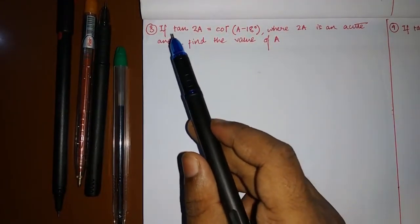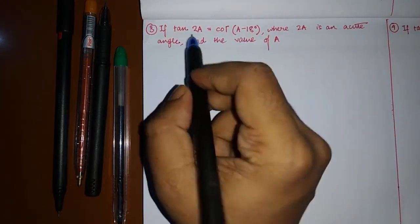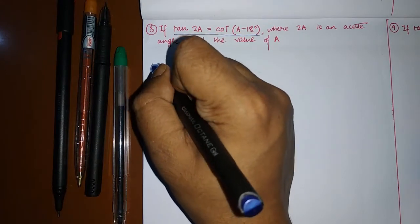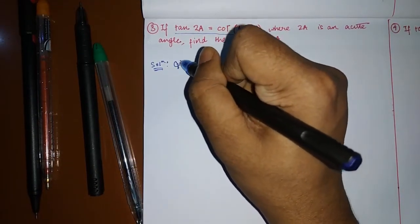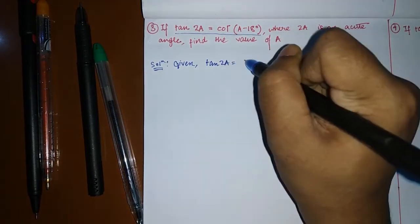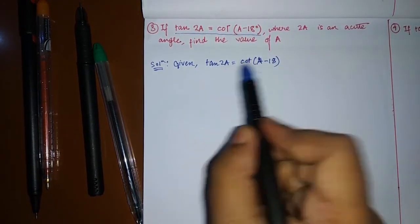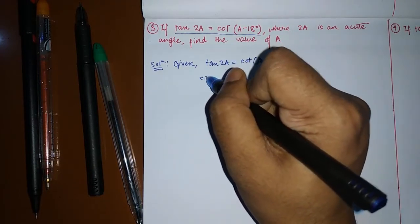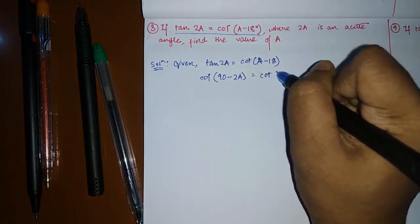Now let's move on to the third question. We are given: tan 2a = cot(a − 18°), and we have to find the value of a. Write it in the solution as given. Convert tan 2a into cot: cot(90° − 2a) = cot(a − 18°).